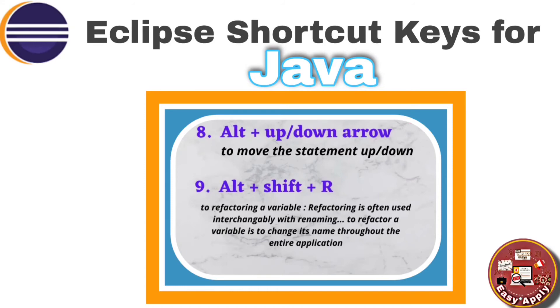The eighth shortcut key is to move a statement up or down. You can press Alt+Up or Alt+Down arrow and your statement will move up or down accordingly.